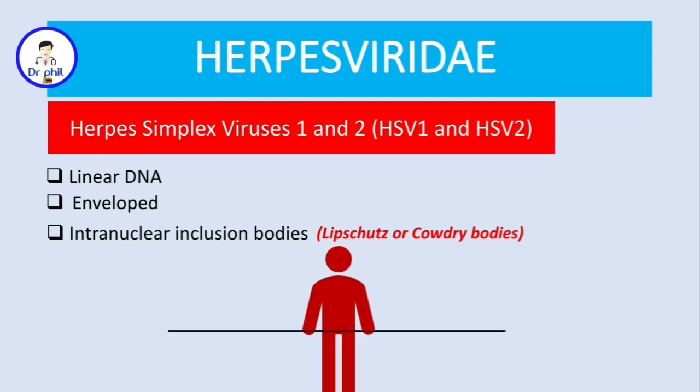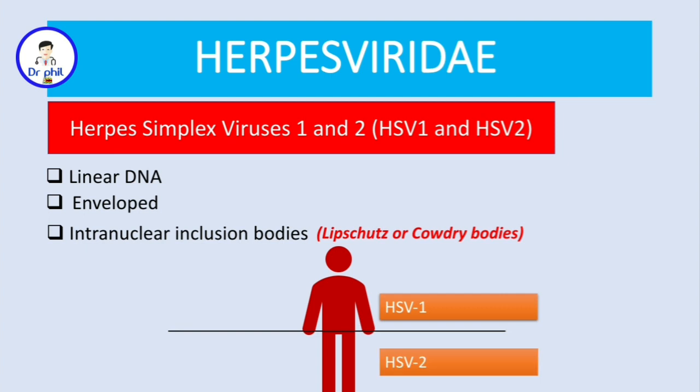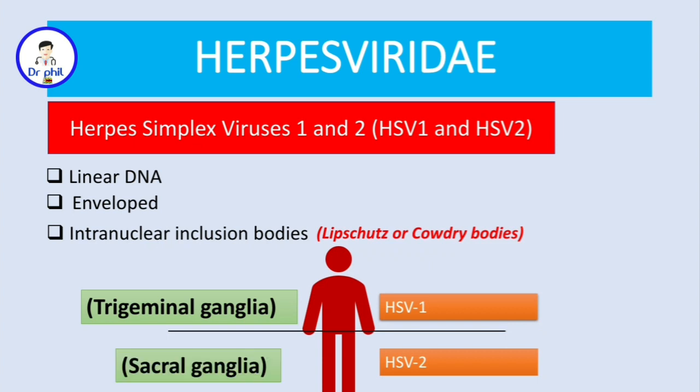You need to remember that HSV-1 usually causes infections above the waist, and HSV-2 causes infections below the waist. HSV-1 usually lies dormant inside the trigeminal ganglia, while HSV-2 lies dormant in the sacral ganglia.